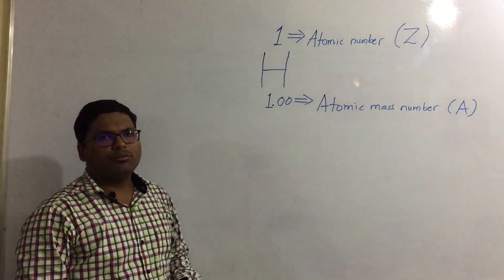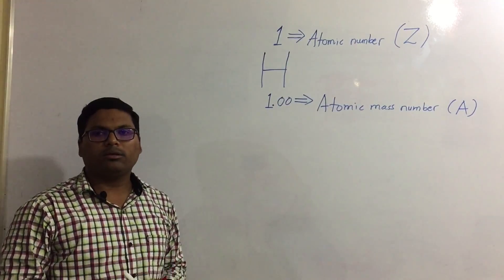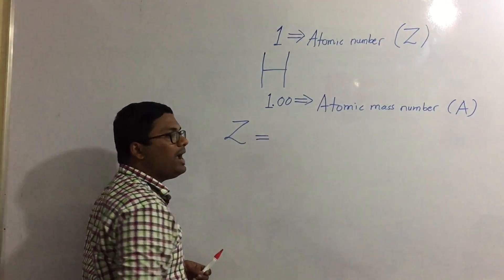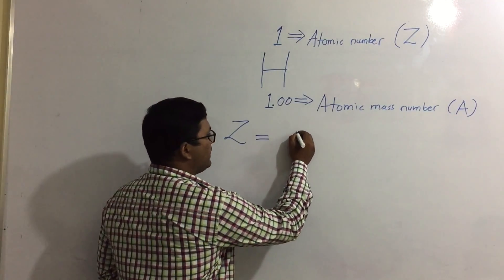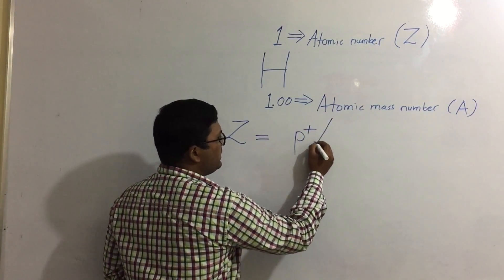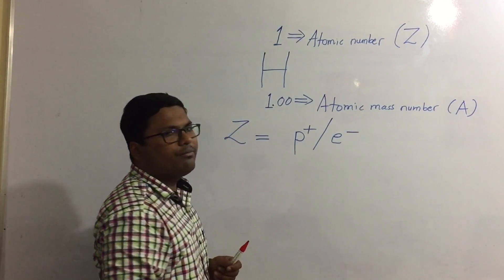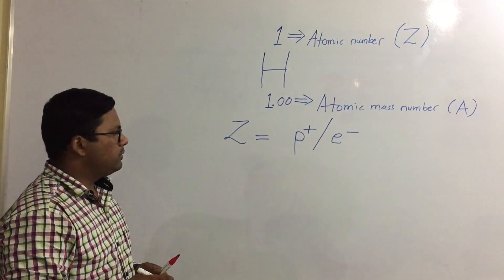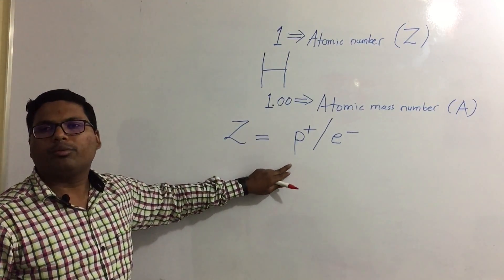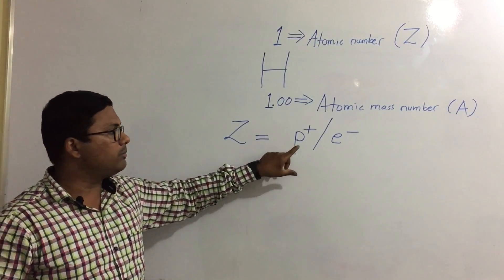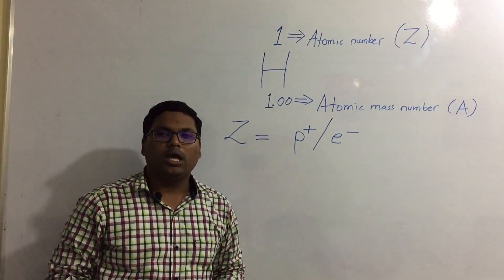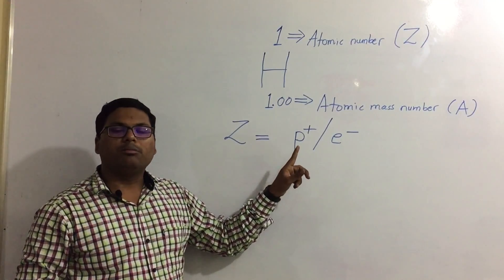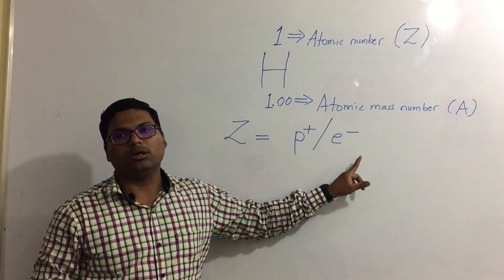Now let us see how this helps us get more information about an atom. The atomic number, by definition, is the number of protons present in the nucleus, or equivalently the number of electrons revolving around that nucleus. So atomic number tells us both the number of protons in the nucleus and the number of electrons outside it. In an atom, the number of protons is always equal to the number of electrons.